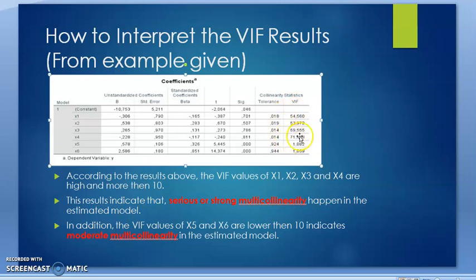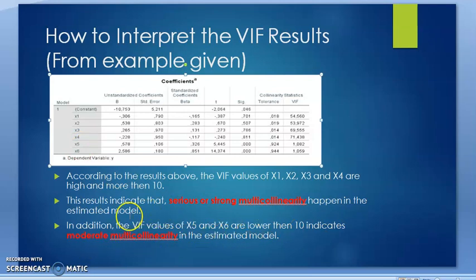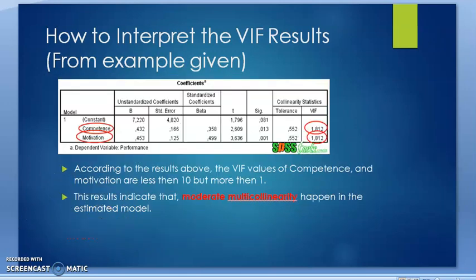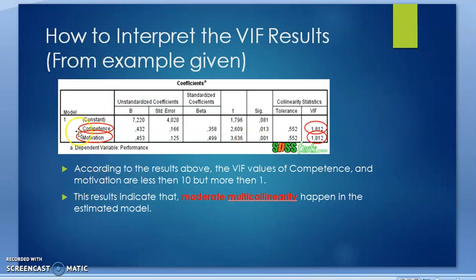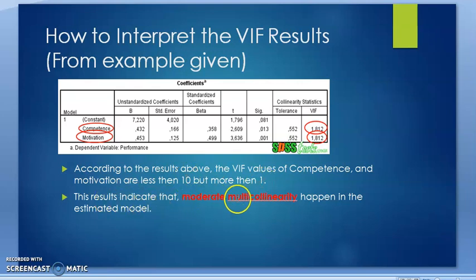In addition, the VIF value of X5 and X6 are lower than 10, indicating moderate multicollinearity in the estimated model. In the second example, for competence and motivation, according to the result, the VIF value of competence and motivation are less than 10 but more than 1. This result indicates that moderate multicollinearity exists in the estimated model.